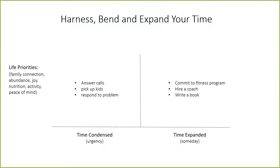This is what I did with my coach and it completely changed my life. On the left hand column, we have your life priorities — the things that are important to you that you want to put time and energy into in your life: your family, your connection, having abundance, having joy, having good nutrition, being active, having peace of mind. Whatever your priorities are, you would put them on this side axis.